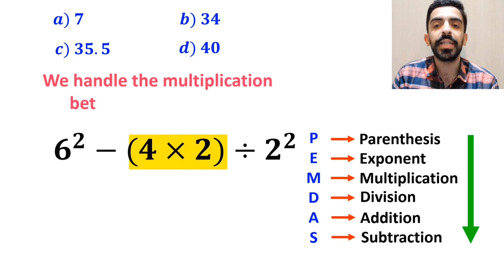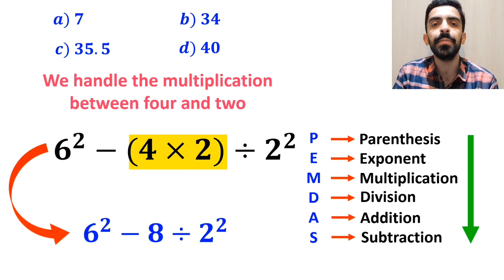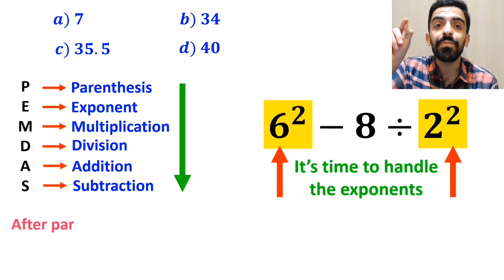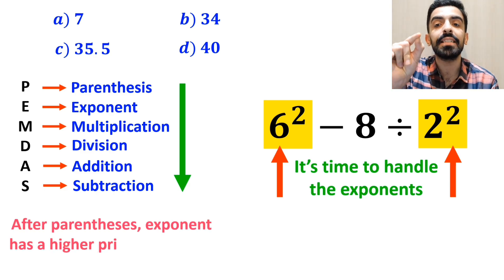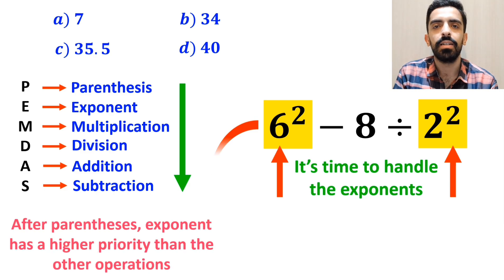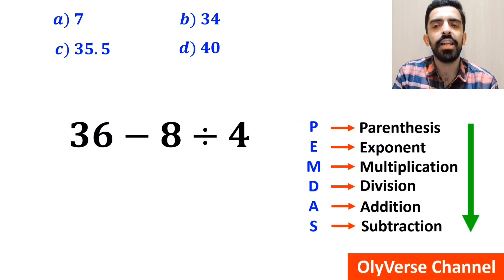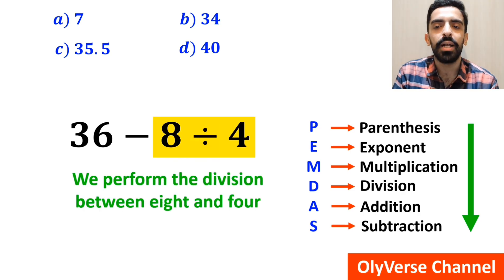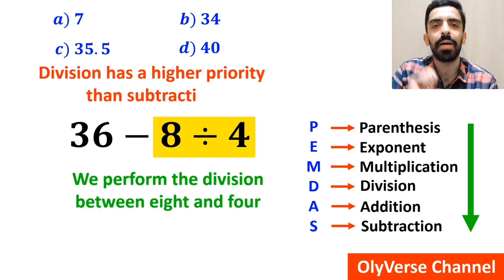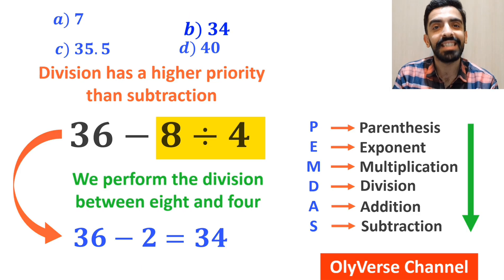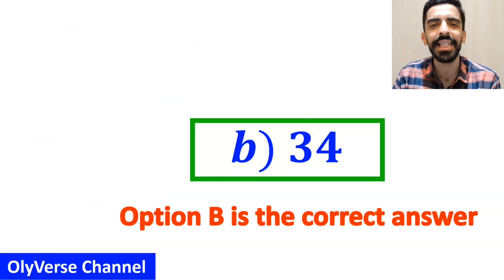Next, it's time to handle the exponents, because according to the PEMDAS rule, after parenthesis, exponents have a higher priority than the other operations. So we can rewrite this expression as 36 minus 8 divided by 4. In the final step, we perform the division between 8 and 4, because division has a higher priority than subtraction. So this expression simplifies to 36 minus 2, which finally gives us the answer 34. Option B is the correct answer to this question.